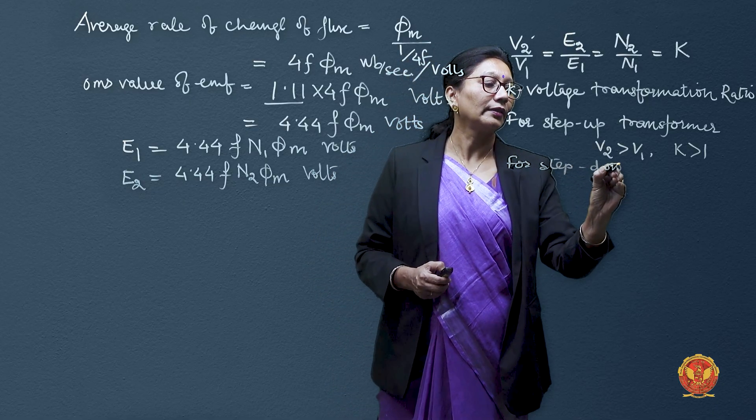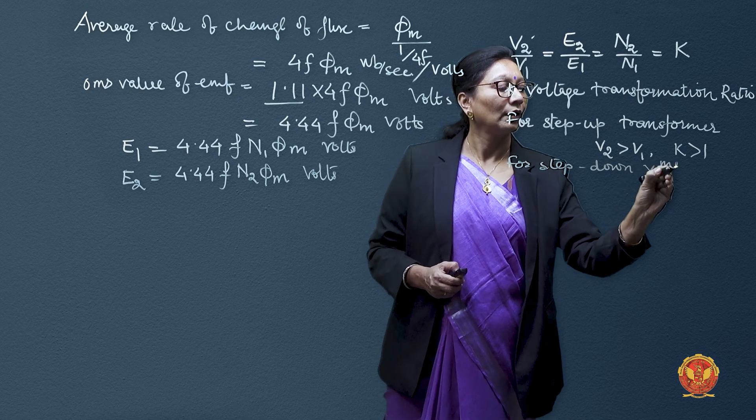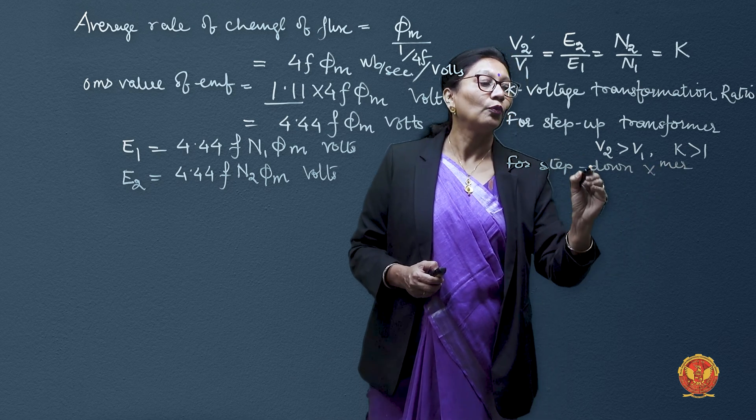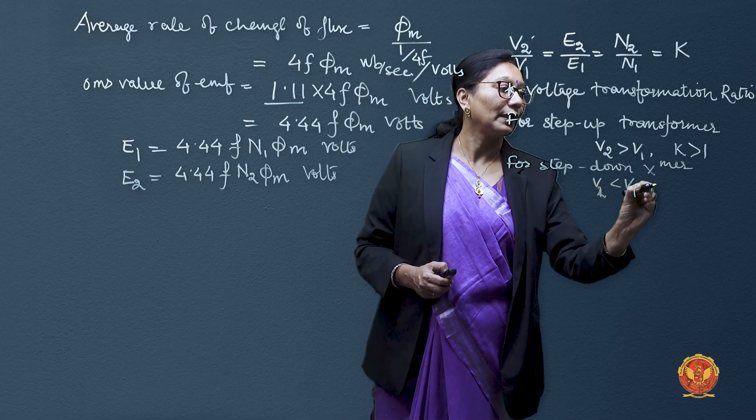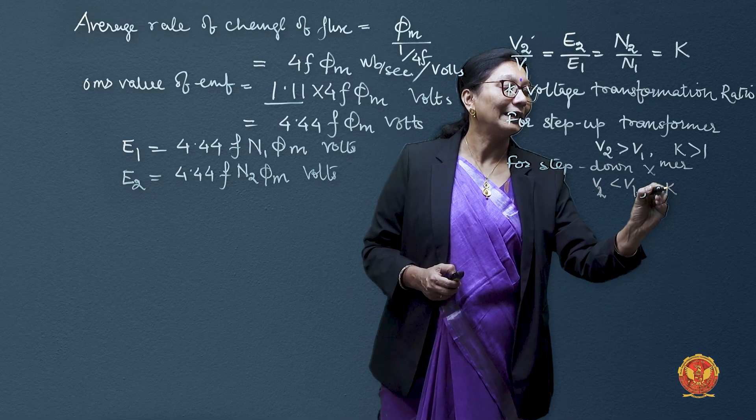We can say that V2 would be less than V1, so K must be less than 1.